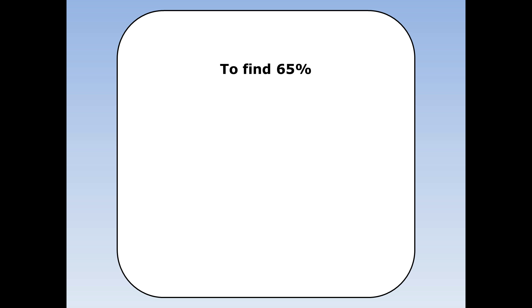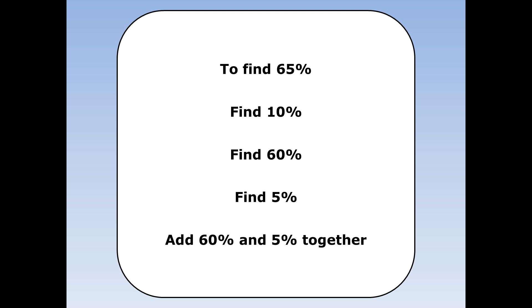To find 65% of something, first find 10%, then find 60%, then find 5%, and then add 60% and 5% together.